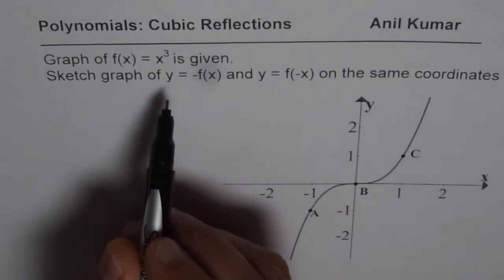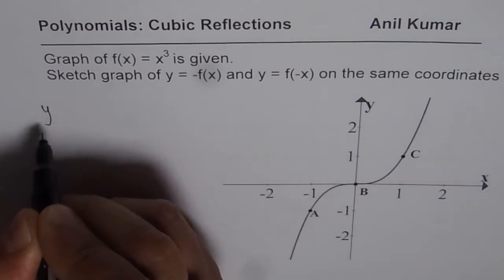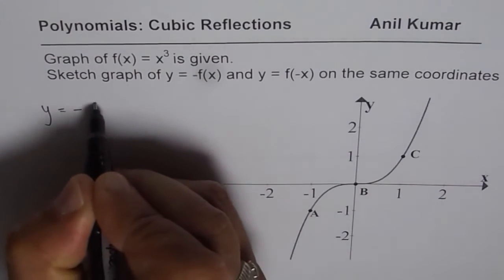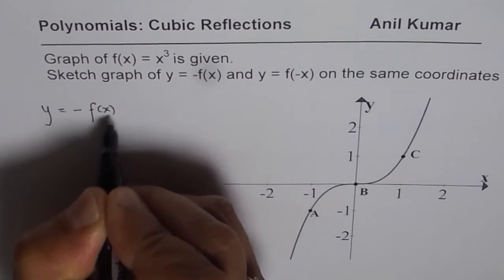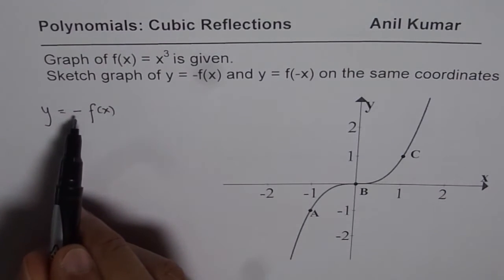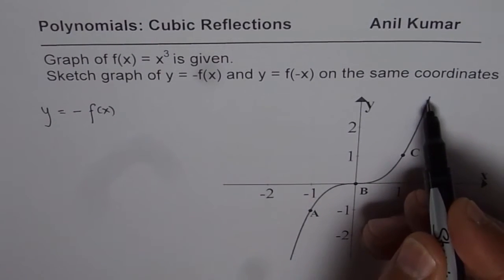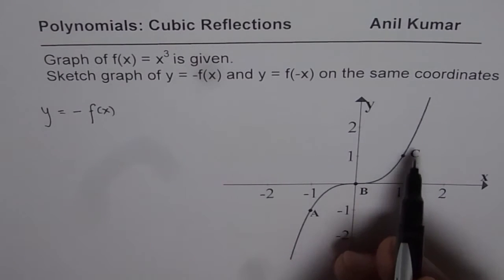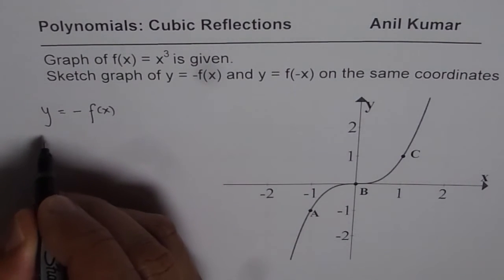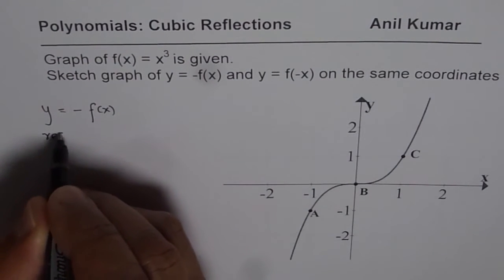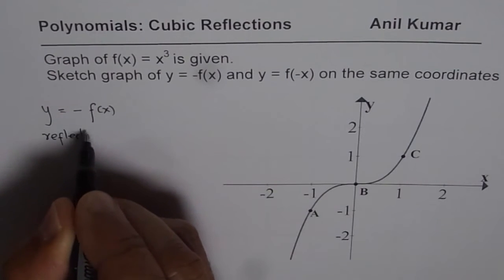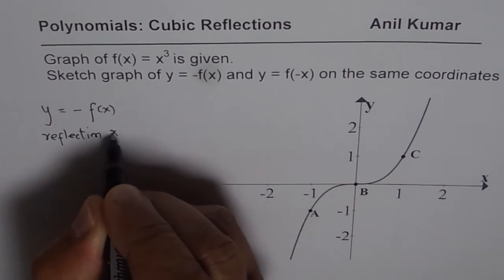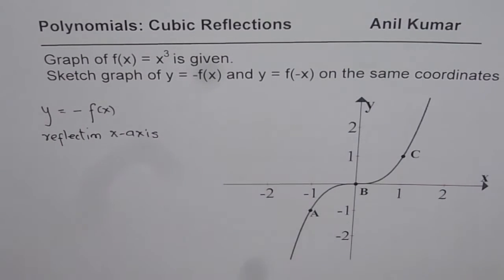So let's begin by sketching y = -f(x). Now, what we are doing here is, for all y-values, we are making them negative of those. That means it really results into reflection on x-axis, right?